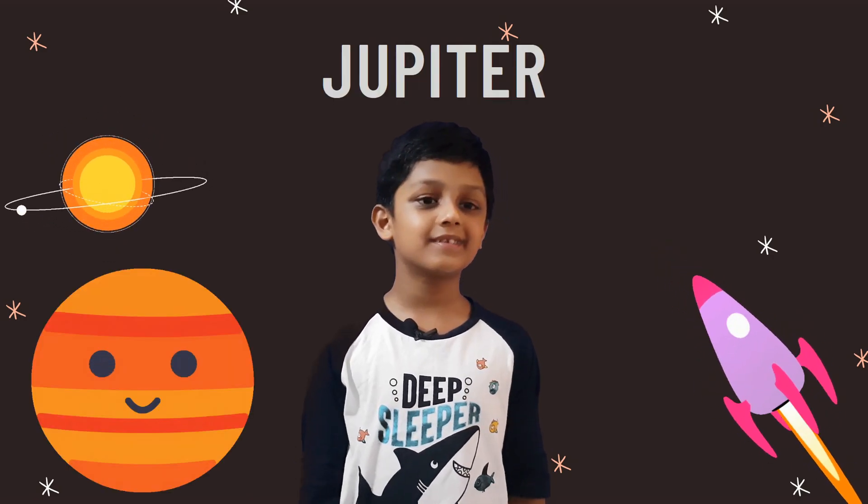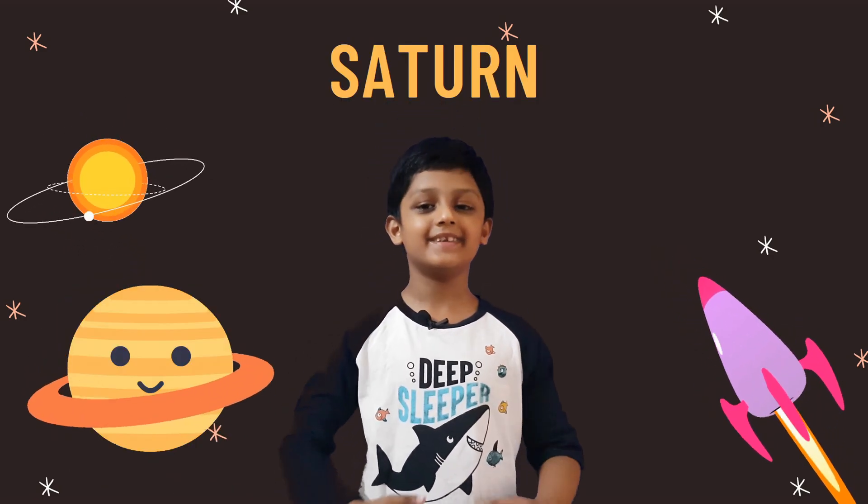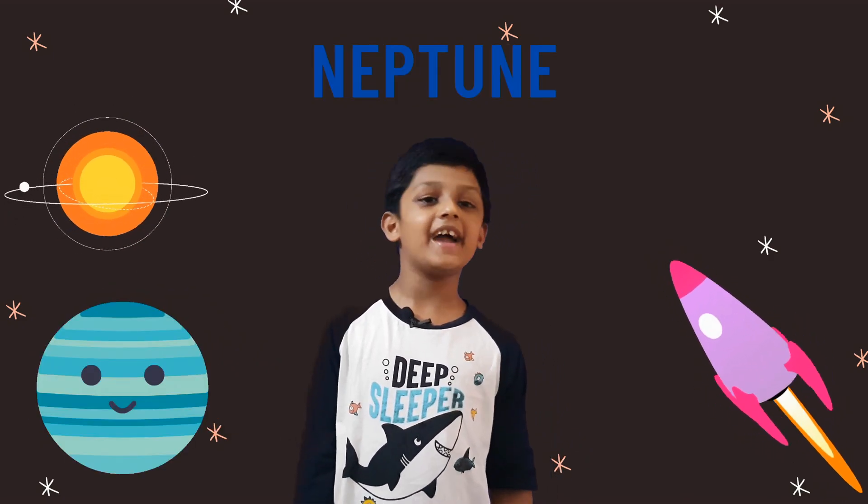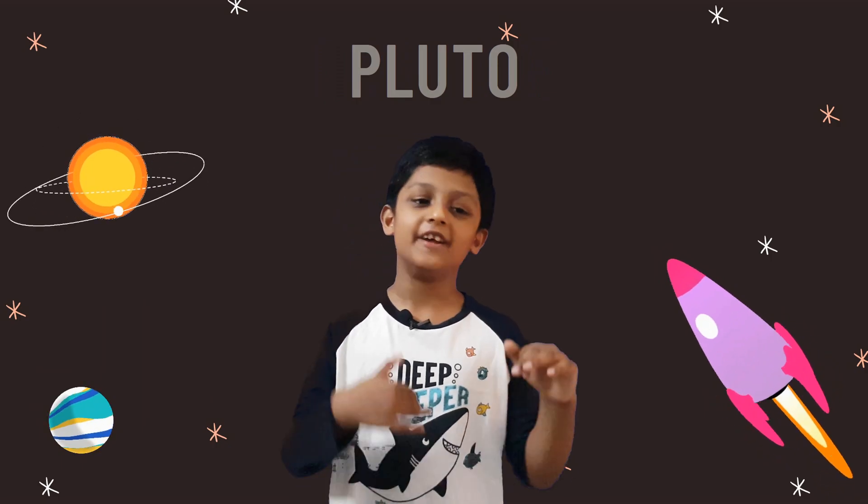Jupiter is the largest one, Saturn has a ring. Uranus and Neptune come next in line, Pluto is not one of them in all.